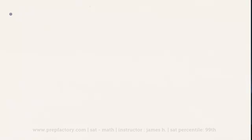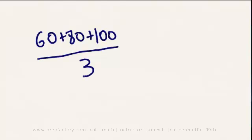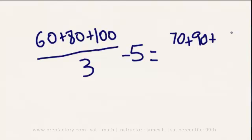Let's take a look at a similar but slightly different kind of practice problem. The question reads: the average of 60, 80, and 100 is 5 more than the average of 70, 90, and what number? We're setting up two averages. So: (60 + 80 + 100) / 3 minus 5 equals (70 + 90 + x) / 3. The first thing we want to do is multiply both sides by 3 to get rid of the denominators.